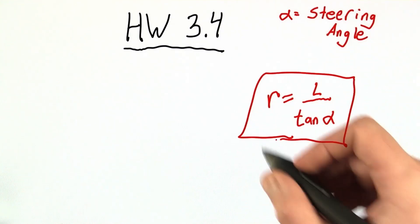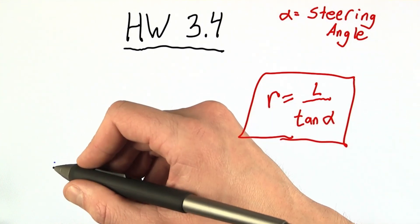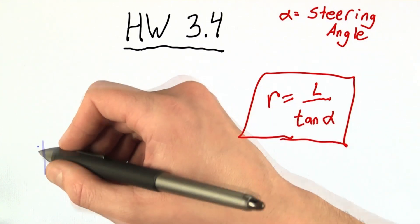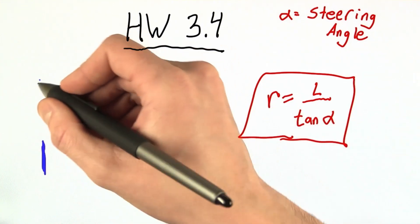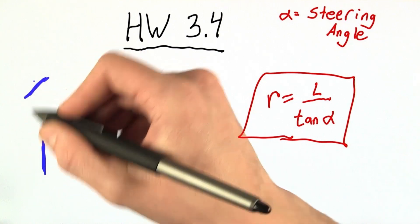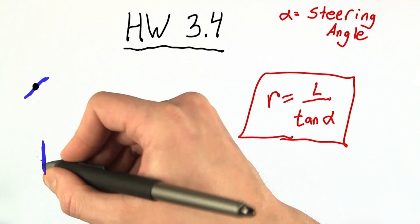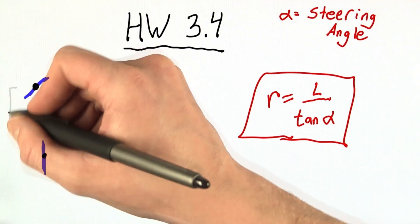To derive it, the key realization is that the front and rear tire do not travel along the same circle. So here's my rear tire, and here's my front tire. They are, of course, separated by a distance that we called L.